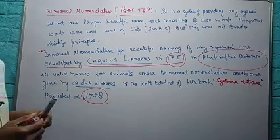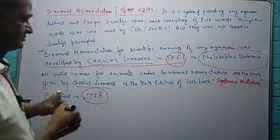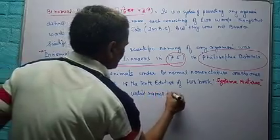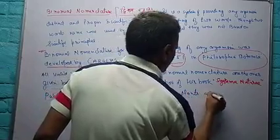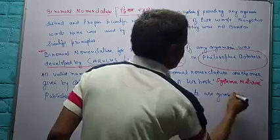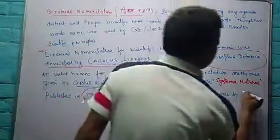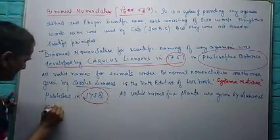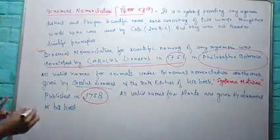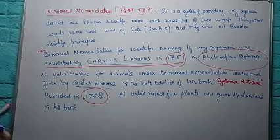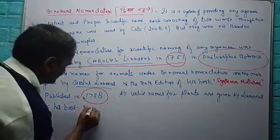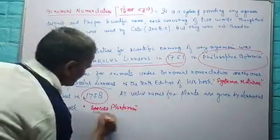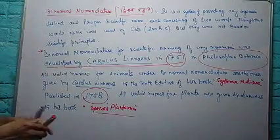All valid names for plants are given by Linnaeus in his book Species Plantarum in 1753.